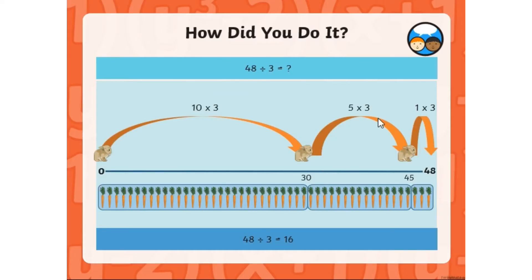But we also know another fact. We know that 5 times 3 is 15, so let's jump on 15 next. That lands at 45 and there's only one group of 3 left until we reach 48. So how many groups of 3 were in 48? 10 add 5 add 1 equals 16. 48 divided by 3 equals 16.